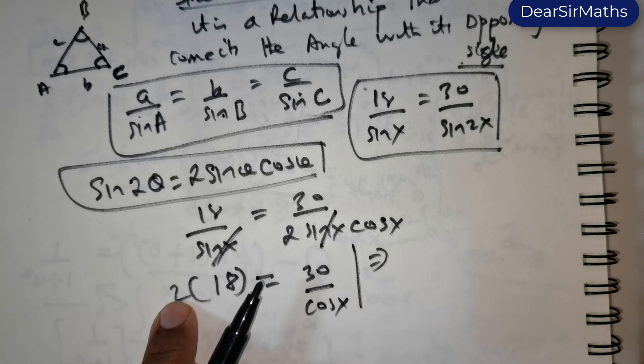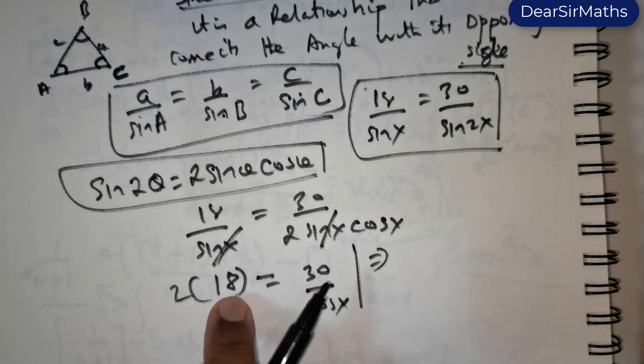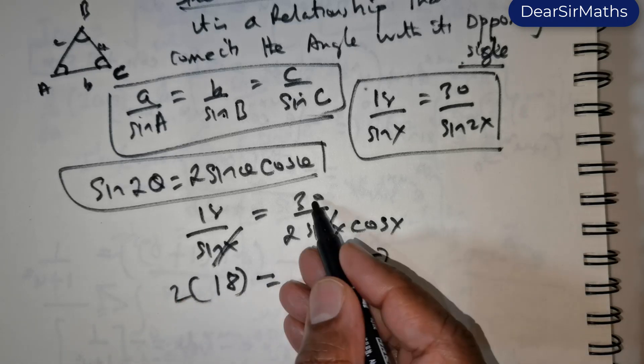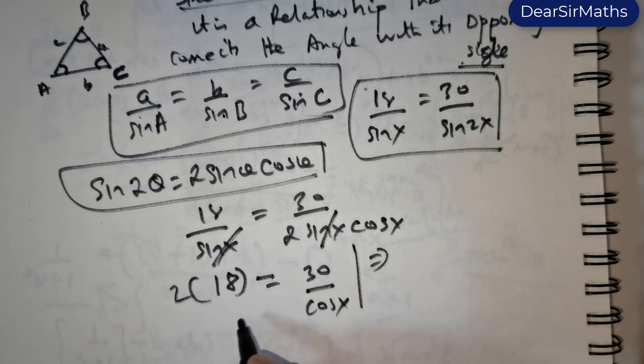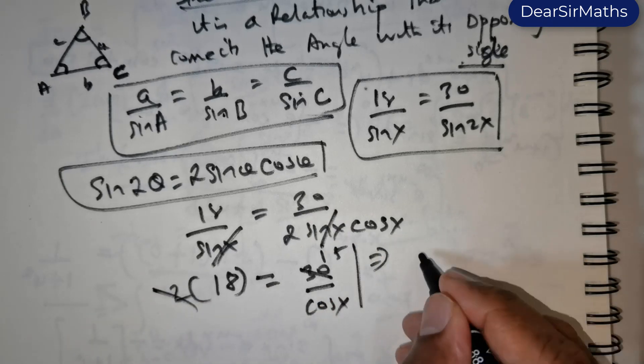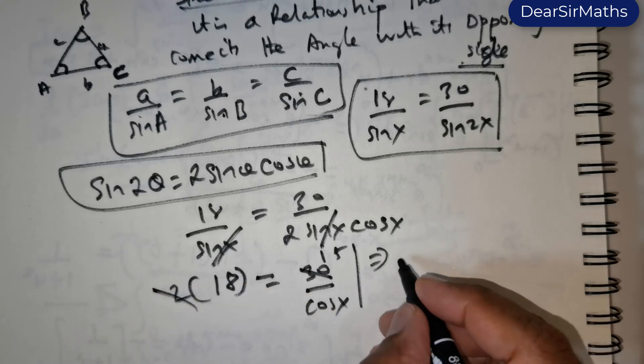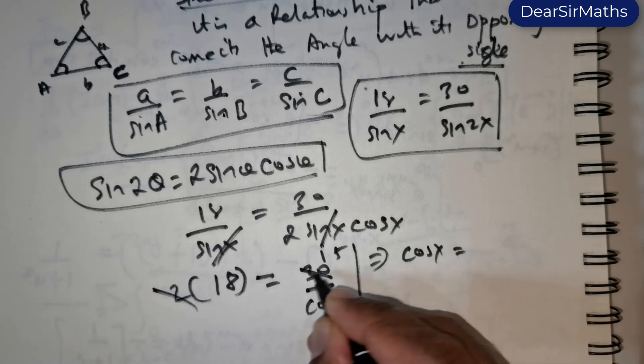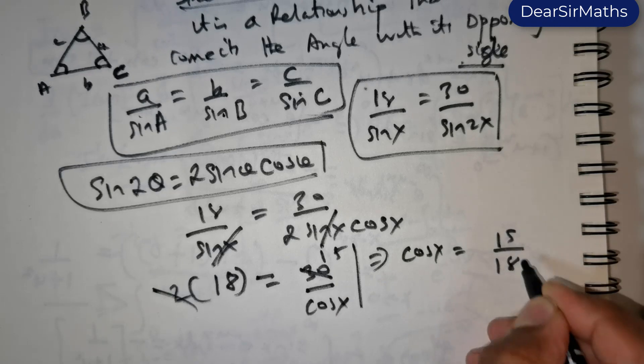So this is nothing but 2 times 18 will give me 36, but in fact I could have reduced this 30 itself. So let me just do that now. So 2 divides 30 fifteen times. So I can rewrite this as cos x equals 15 over 18.